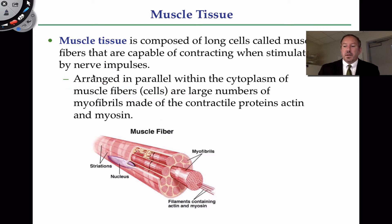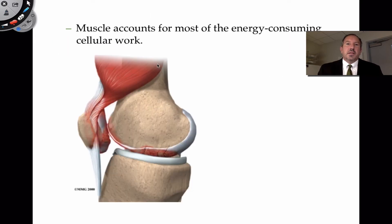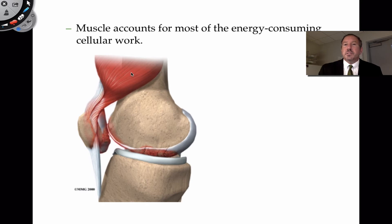A muscle cell is pretty interesting because it contains all those myofibrils. If the proteins are moving, moving implies energy. Muscle consumes a lot of the body's energy. Other high-energy consumers include the brain — which consumes a tremendous amount — and the kidneys.